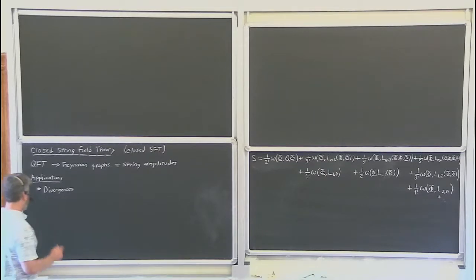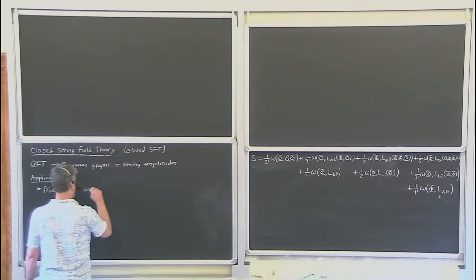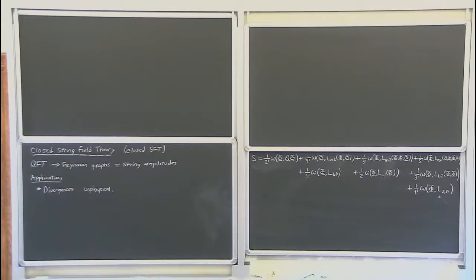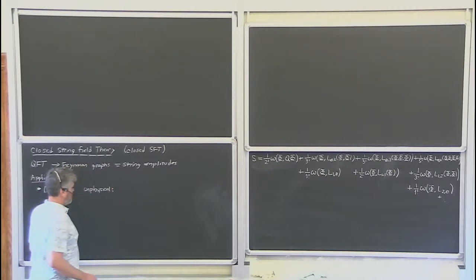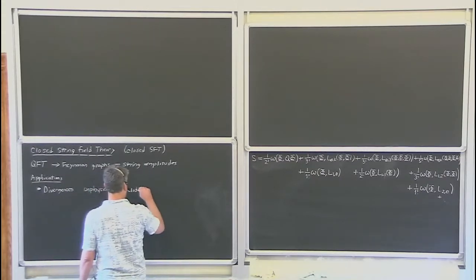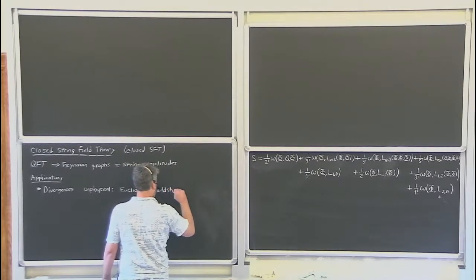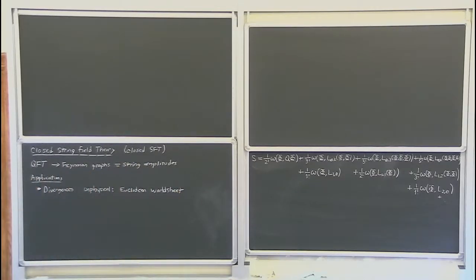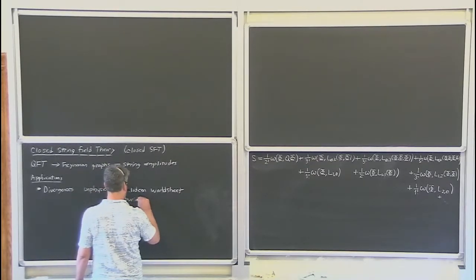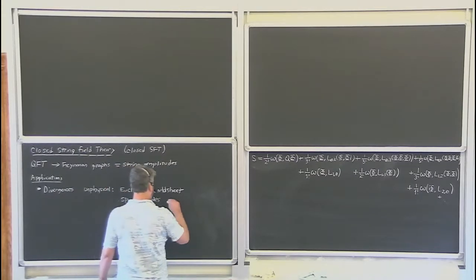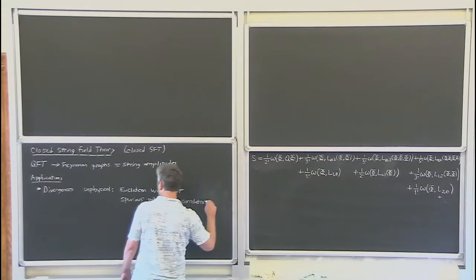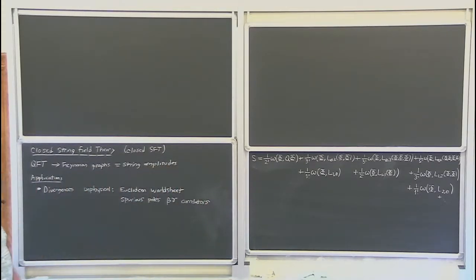Such divergences include unphysical divergences — for example, divergences which follow from using a Euclidean worldsheet towards the boundary of moduli space. There are also divergences due to spurious poles in beta-gamma correlation functions. These are unphysical divergences that can appear when computing string amplitudes.